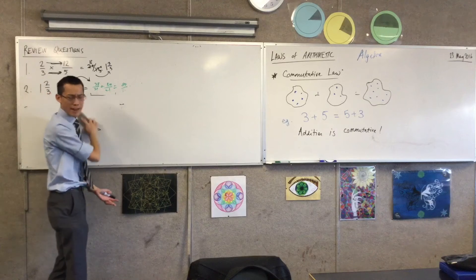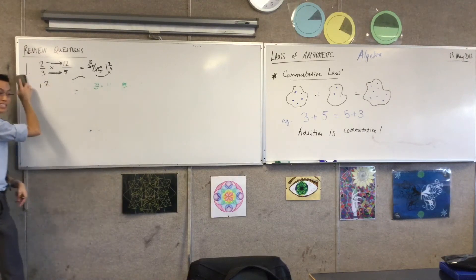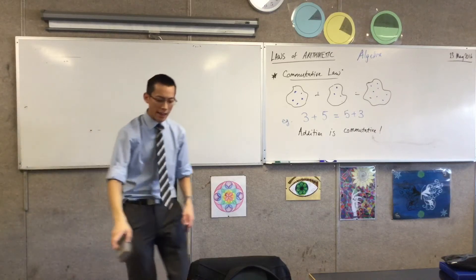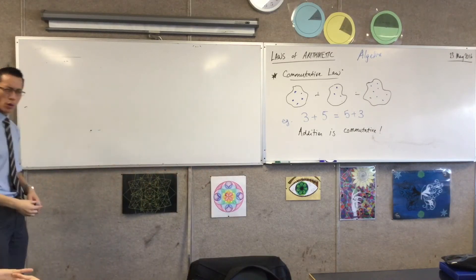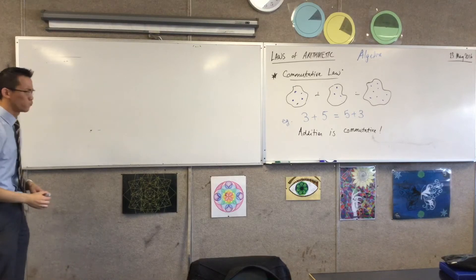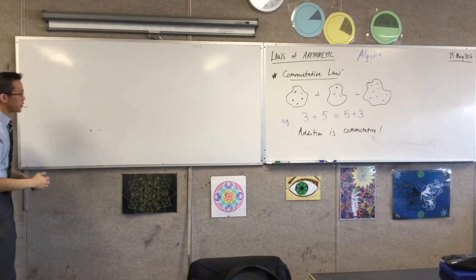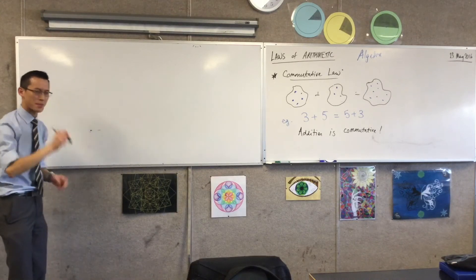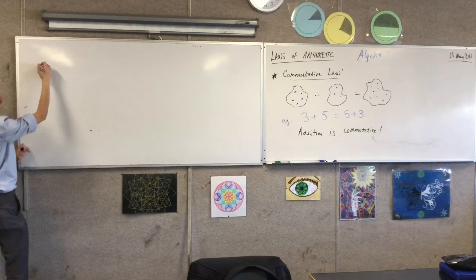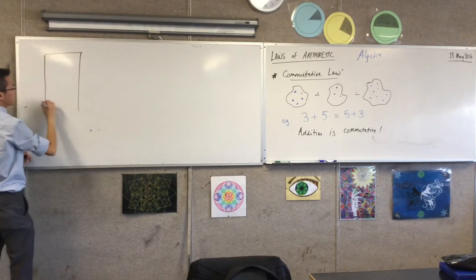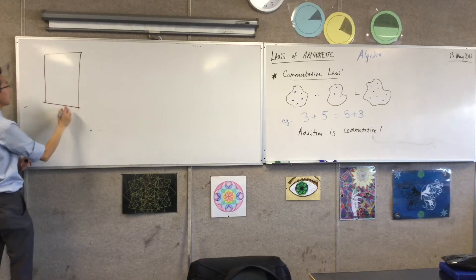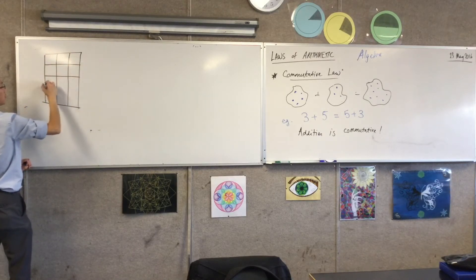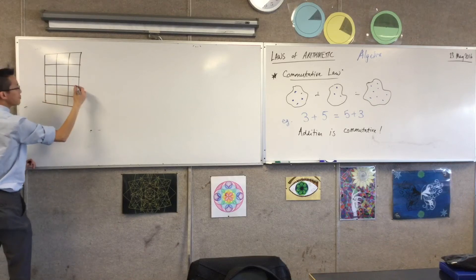Multiplication is all about groups. Like, if I said instead of three plus five, if I said three times five, three times five is three groups of five. Here's how I'm going to do it. Remember how I was drawing the fractions before and I had some boxes? We're going to do boxes again. If you've got a ruler, this might help. Let's divide this one, two, three.